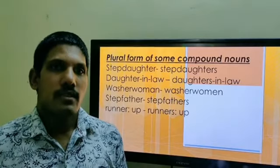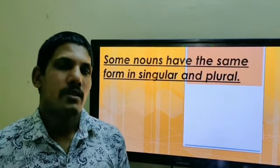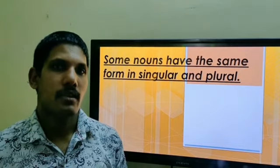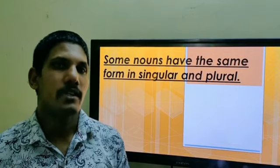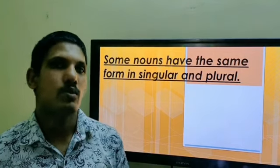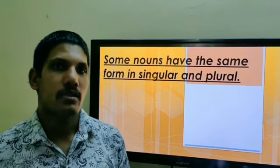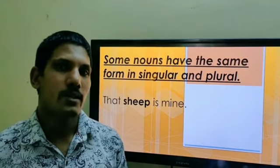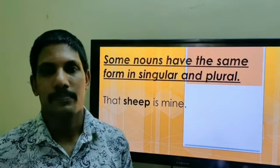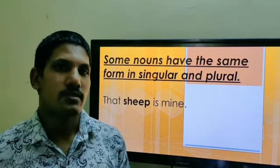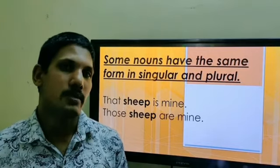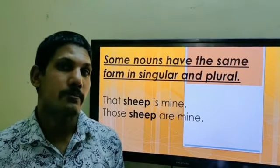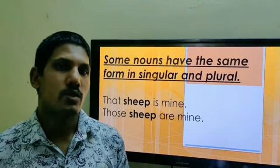Now there are some singular nouns that remain unchanged even in their plural forms. Like sheep — let it be one or many, it would remain sheep. See these sentences: 'That sheep is mine' — here we are talking about one sheep. 'Those sheep are mine' — here, though we are talking about many sheep, we are still using sheep.